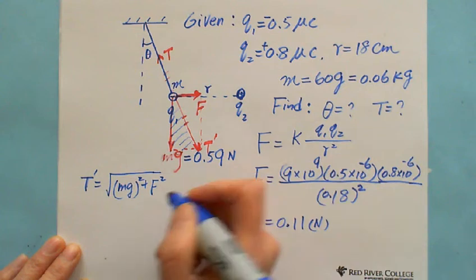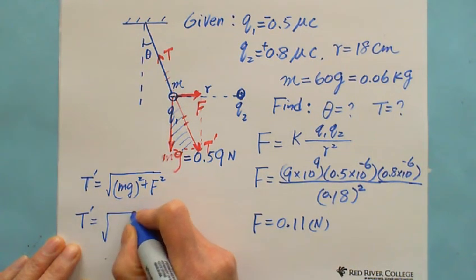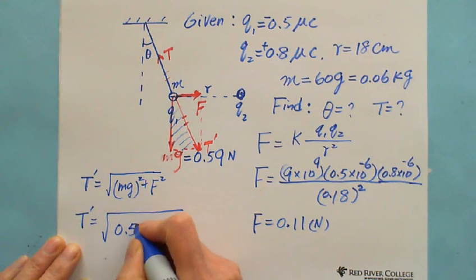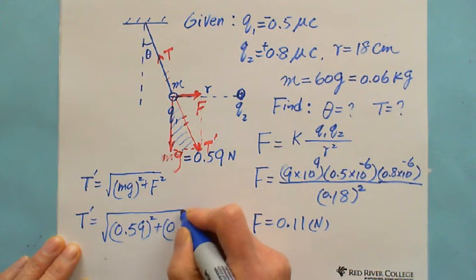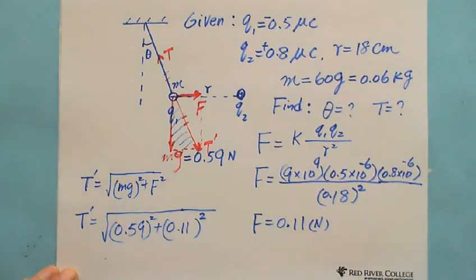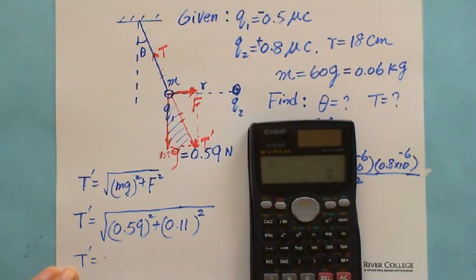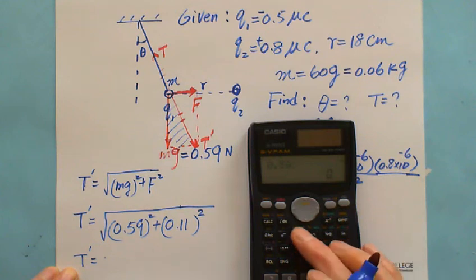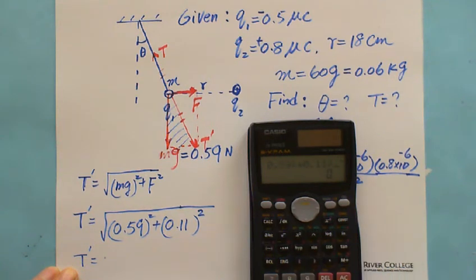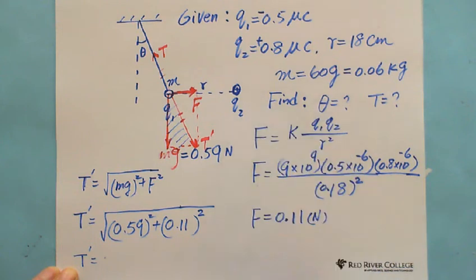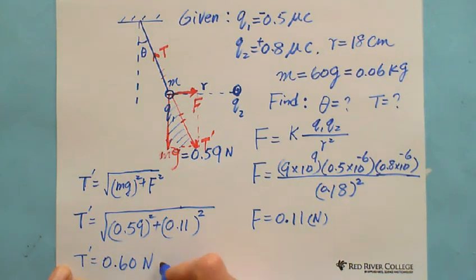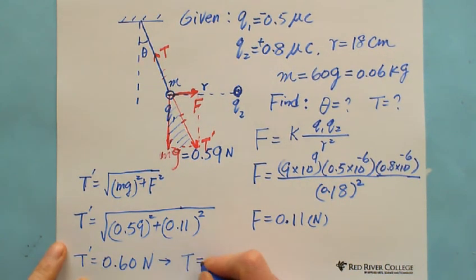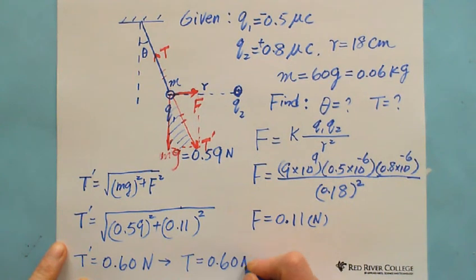Which gives us equals to square root 0.59 squared plus 0.11 squared, and we can get the answer. This equals 0.60 Newton. So tension also equals 0.60 Newton.